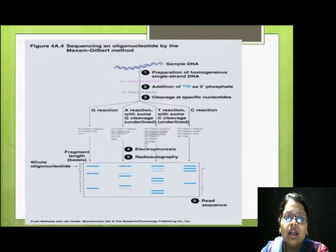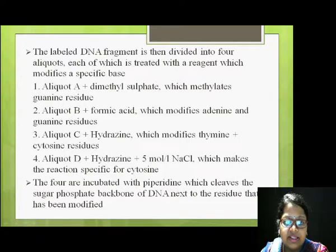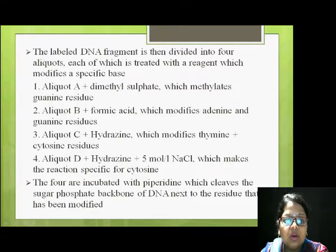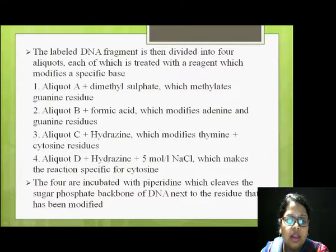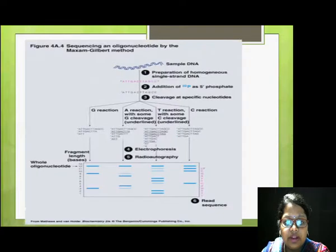Cleavage is done using chemicals in four eliquots. In eliquot A, we add dimethyl sulfate, which methylates and modifies the guanine residue. In eliquot B, we add formic acid, which modifies adenine and guanine residues. In eliquot C, we add hydrazine, which modifies thymine and cytosine residues. In eliquot D, we add hydrazine plus NaCl, which makes the reaction specific for cytosine.